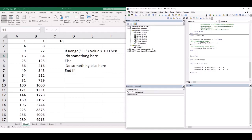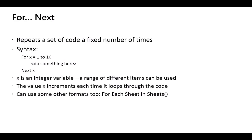The For loop has useful variations. For Each Sheet In Sheets lets you run code on every single sheet in your workbook. You can also iterate over cells: For Each Cell In Range("C5:C13"), which processes each cell one at a time. These are handy ways to use For/Next loops in VBA.